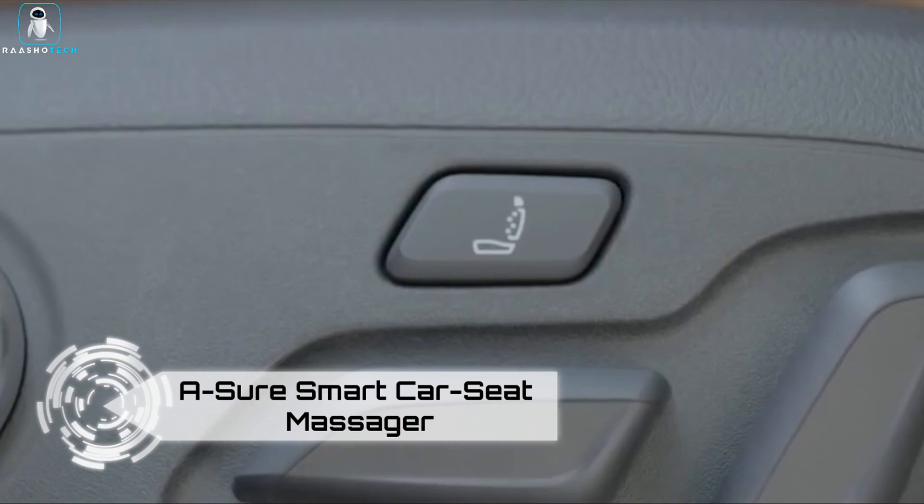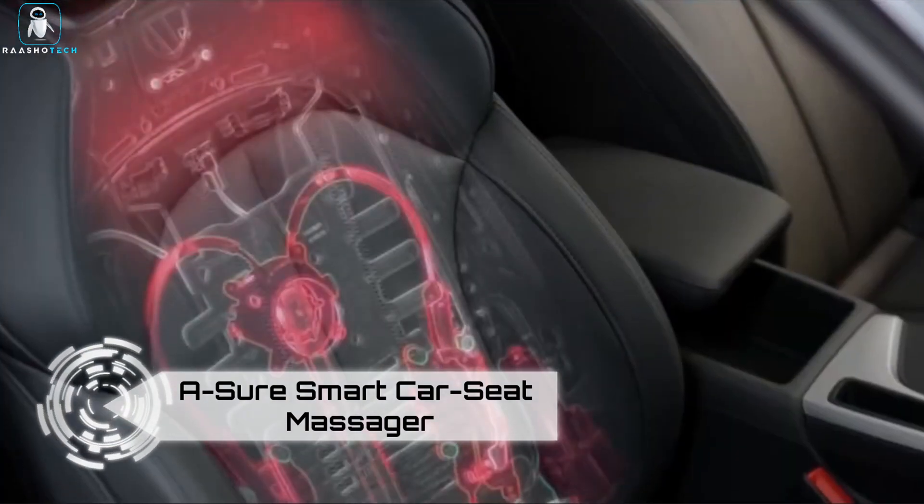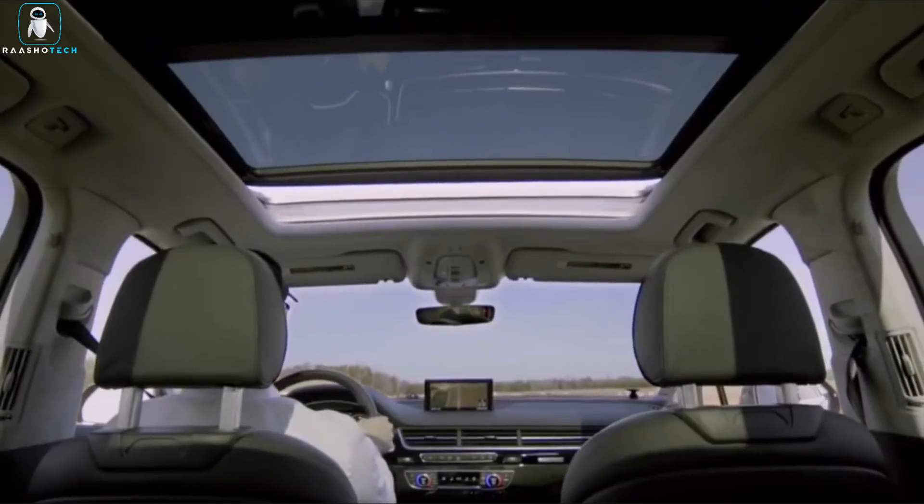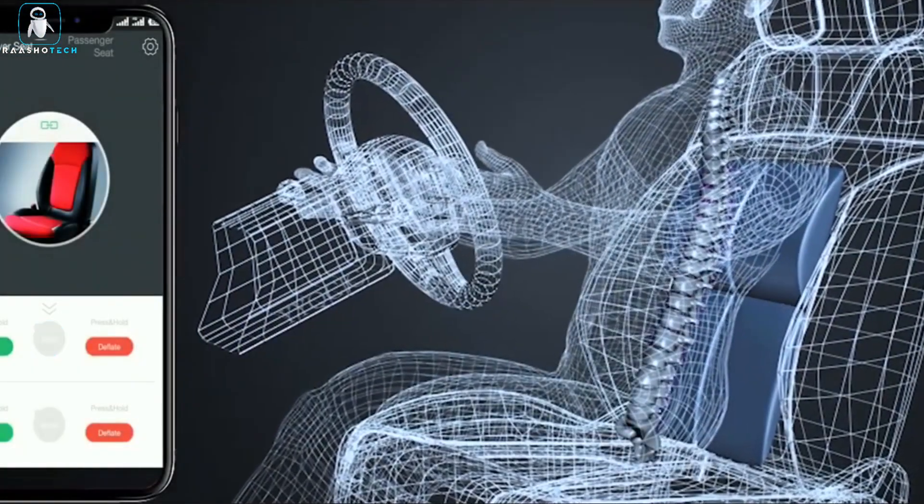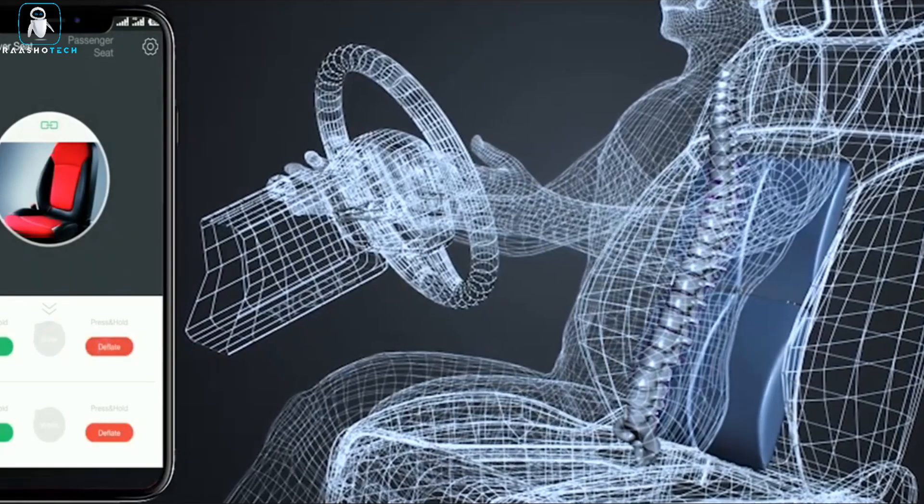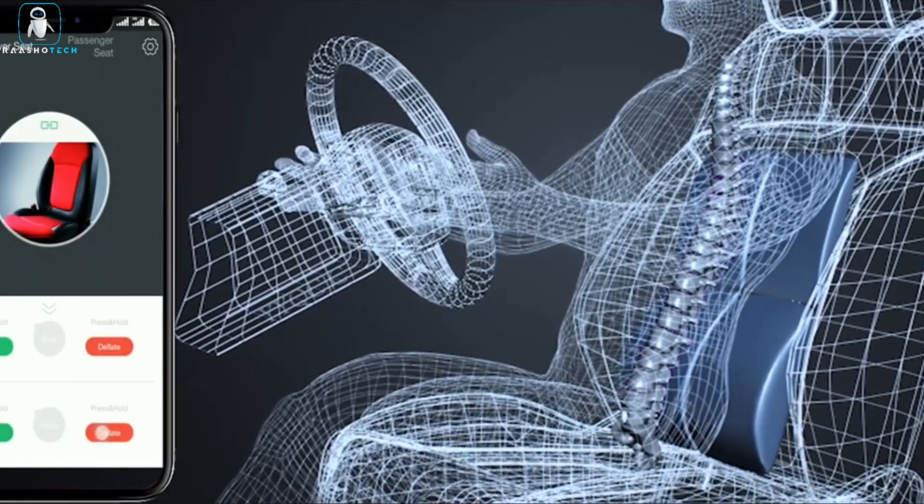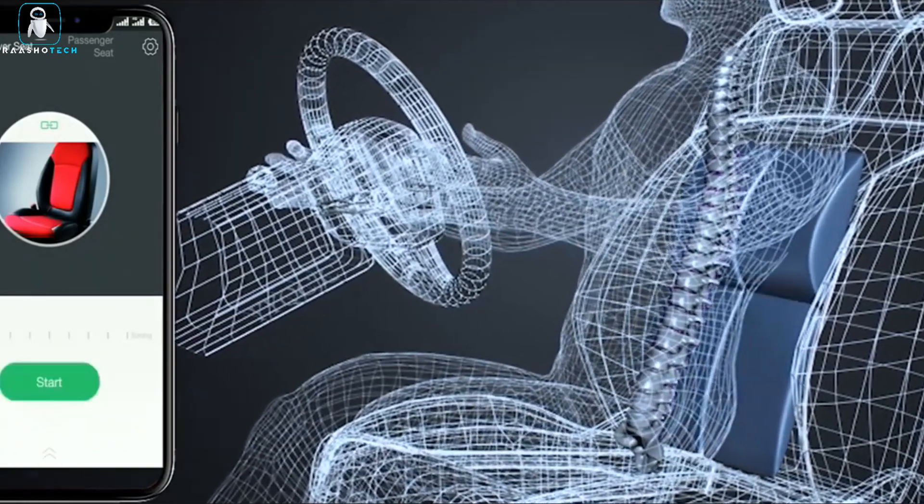Transform your commute from chaos to calm with the Asure Smart Car Seat Massager. In the urban jungle, where 9% of your life seems stuck in traffic, this innovative solution is a game changer. Take Los Angeles for example, where drivers endure a whopping 102 hours of gridlock annually. That's a lot of red brake lights.